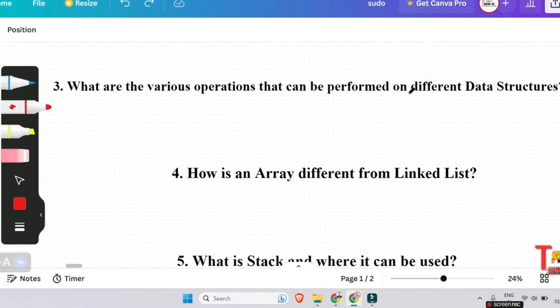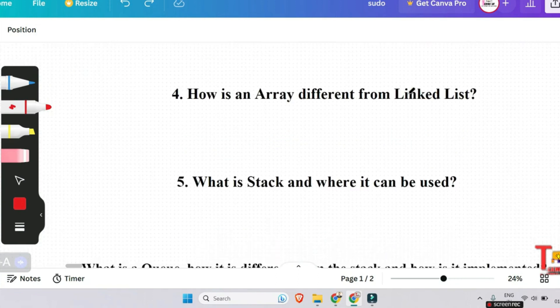And the next question is, how is an array different from linked list? This is very important question. So the answer will be: the size of arrays is fixed and linked lists are dynamic in size, it is flexible. Inserting and deleting a new element in an array of elements is very expensive, whereas both insertion and deletion can easily be done in linked list. Random access is not allowed on linked list. Extra memory space for a pointer is required with each element of the linked list.